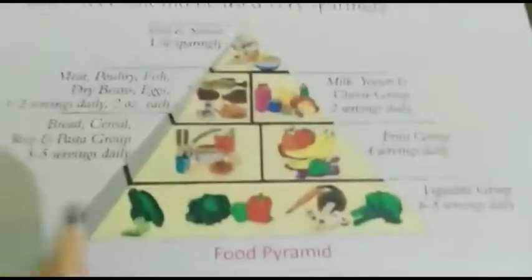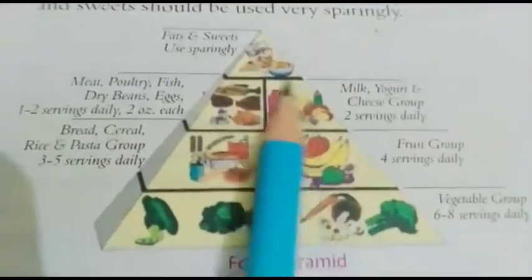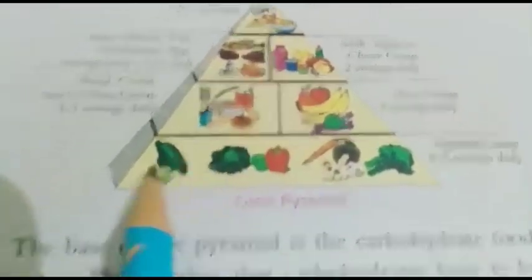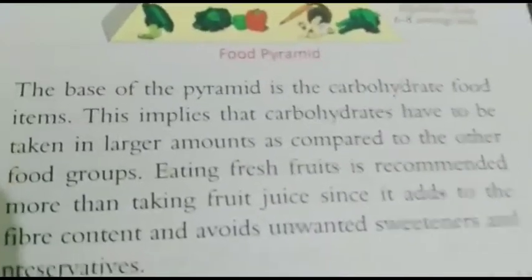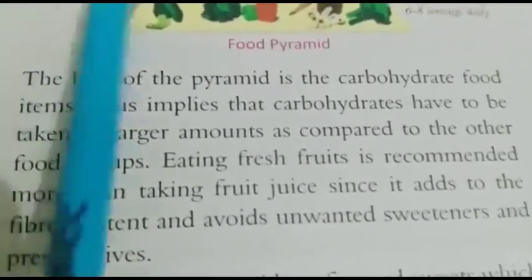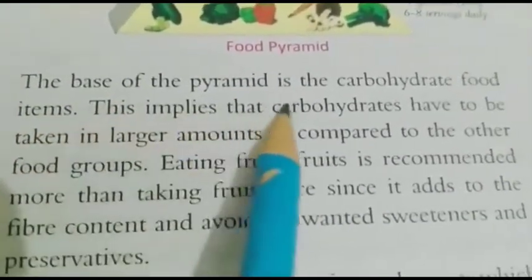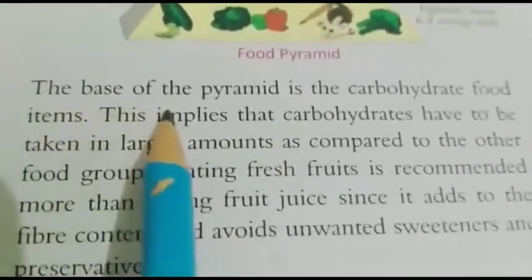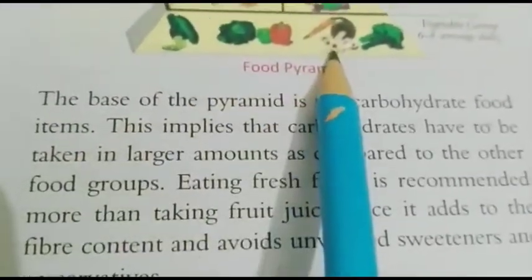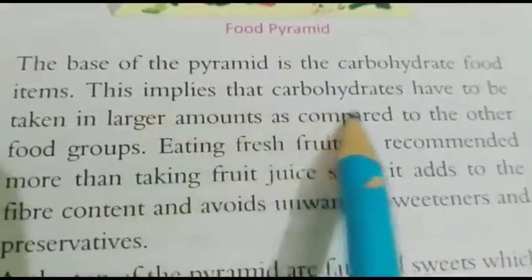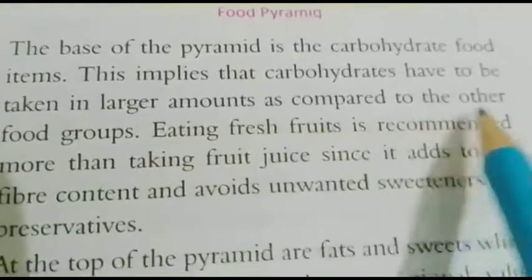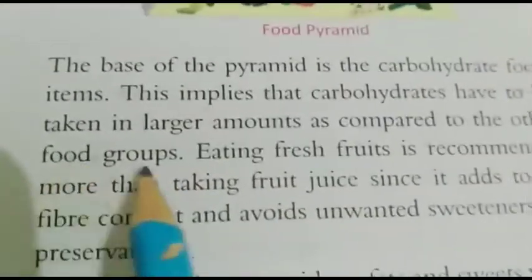This is the pyramid of good health. The base of the pyramid contains carbohydrate food items. This implies that carbohydrates have to be taken in larger amounts as compared to the other food groups.